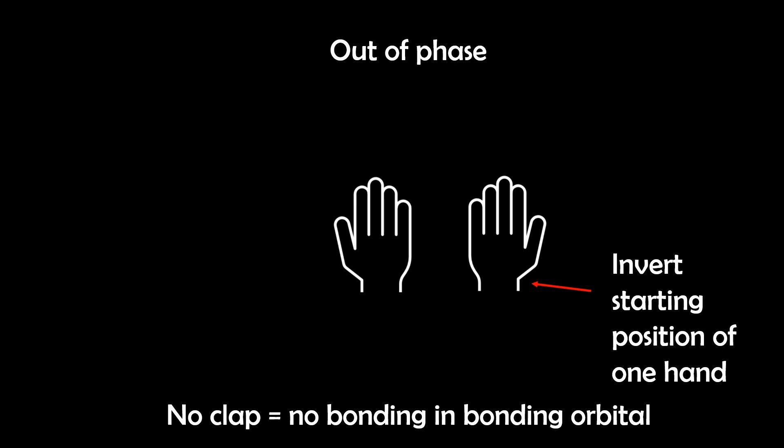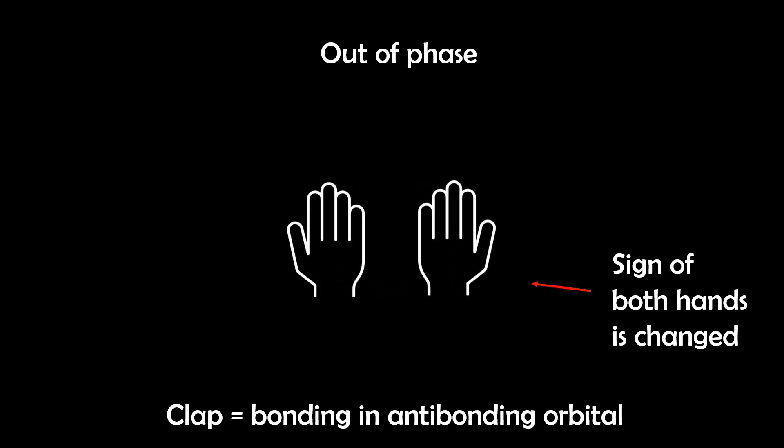And interestingly, if both hands are moving out of sync, but in a repeating pattern, they can still meet at the same time and create a clap. They just started at different points. So this is similar to how out of phase wave functions can still generate an interaction just in a different way, forming an antibonding orbital instead.